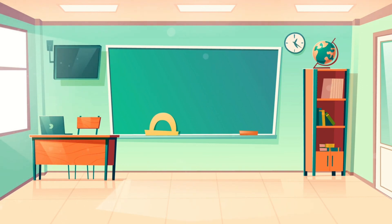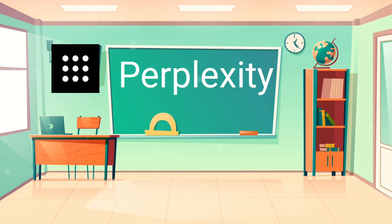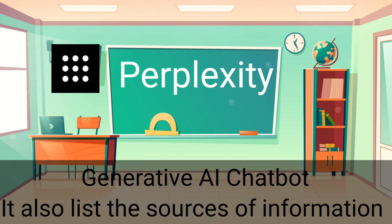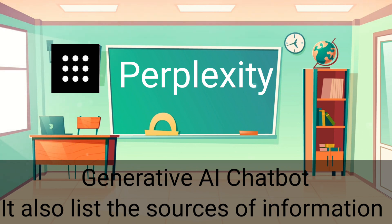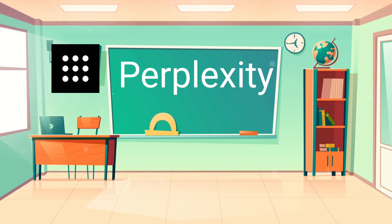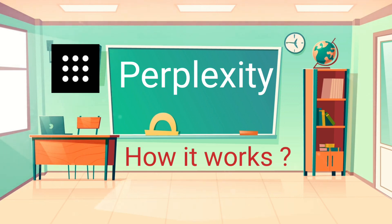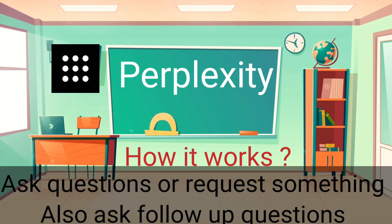Second on the list is Perplexity AI. It's again a generative AI chatbot that lets users ask questions and get responses conversationally. What seems to set it apart is that it cites sources, which are easily clickable to get more context and more information. How it works: go to the website and ask it a question or request something.